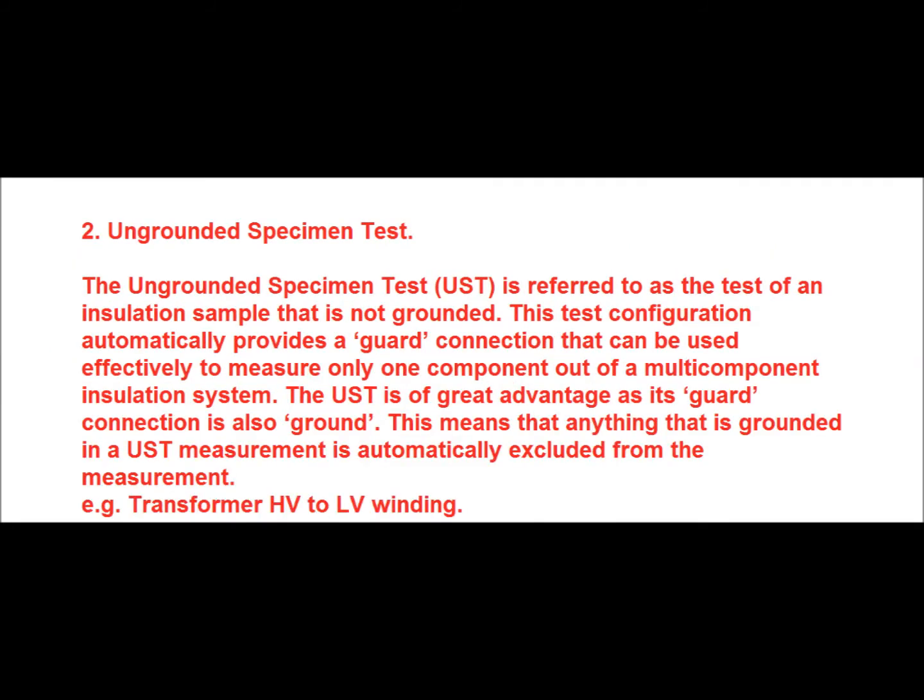The ungrounded specimen test, or UST, is referred to as the test of an insulation sample that is not grounded. This test configuration automatically provides a guard connection that can be used effectively to measure only one component out of a multi-component insulation system. The UST has a great advantage in that its guard connection is also grounded, meaning that anything grounded in a UST measurement is automatically excluded from the measurement.